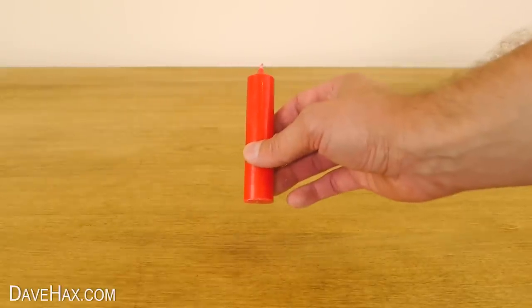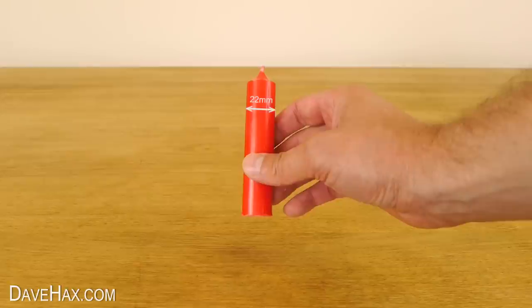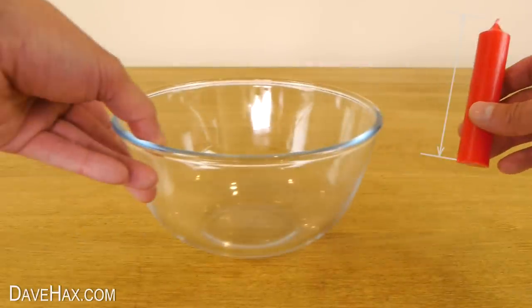Today I'm going to show you a simple science trick for how to burn a candle under water. My candle measures about 22 millimeters in diameter and I cut it so it's roughly the same length as the depth of this bowl.